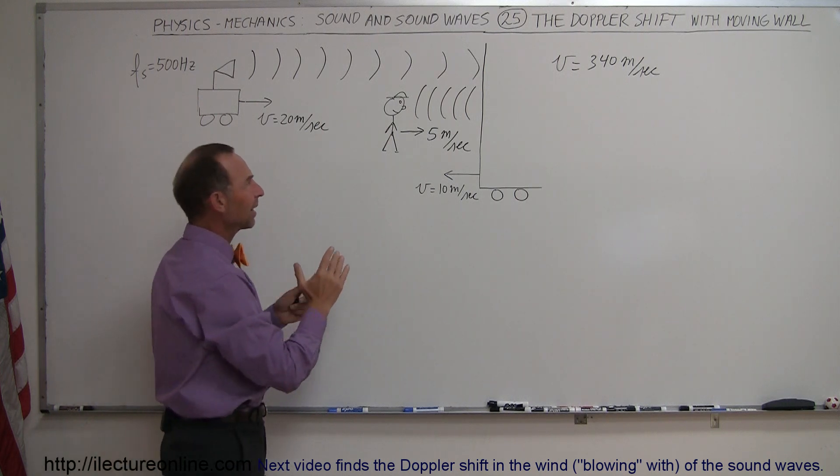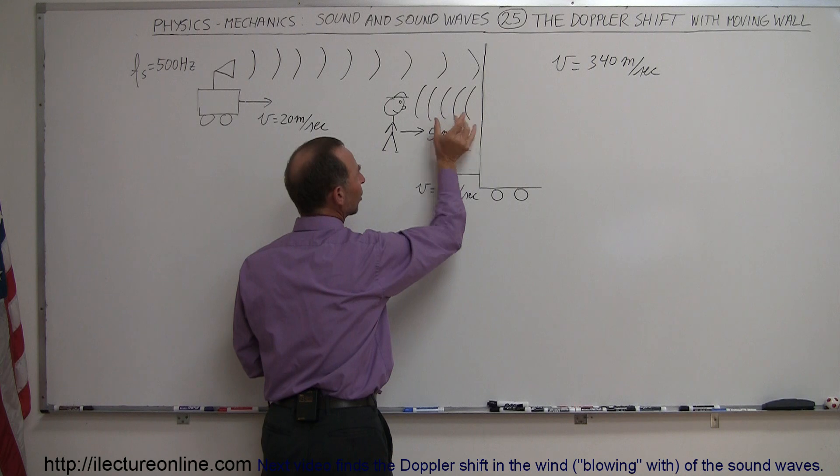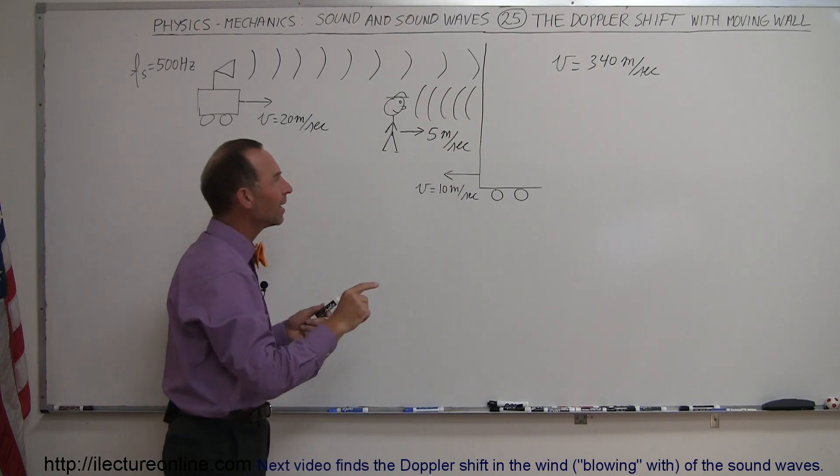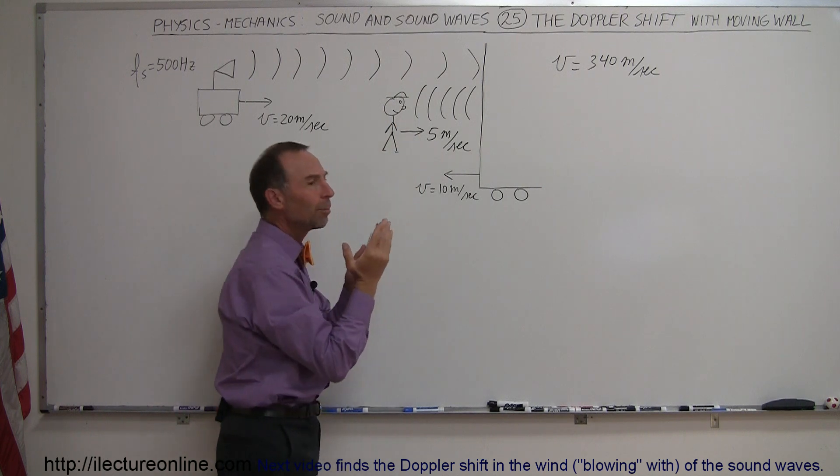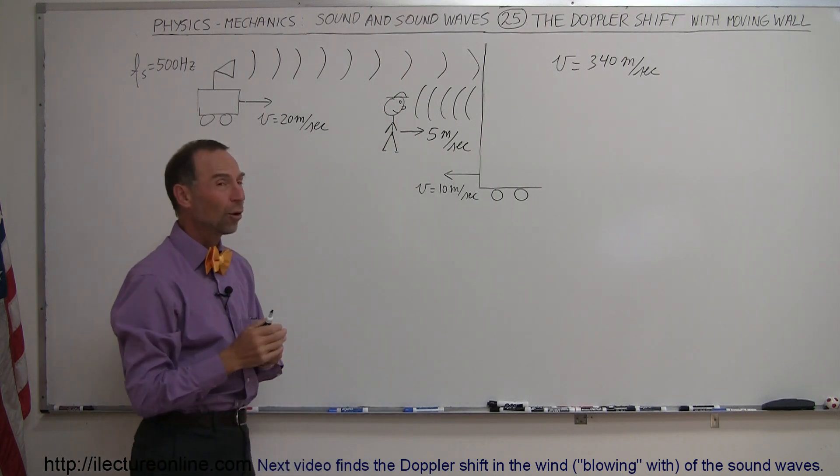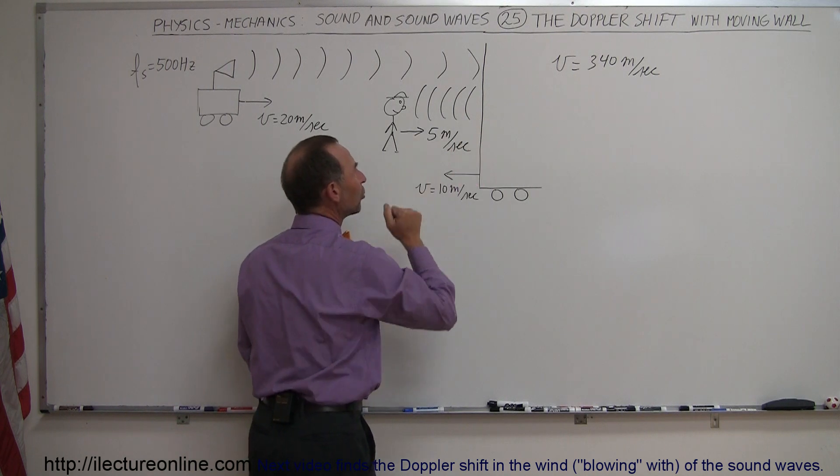Now, the effect that this wall has by moving to the left, by causing the waves to be closer together, is the same thing as if the observer is moving towards the waves also appearing to make them appear to be closer together. So, it's almost like it is adding velocity to the observer.